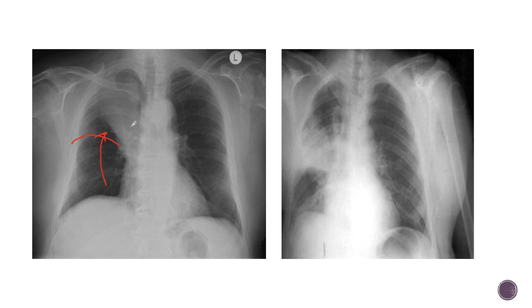In the second image, we can see the presence of opacity in the right upper and mid zone. The horizontal fissure on the right side is horizontally oriented and there are no other features of volume loss. So this is a right upper lobe consolidation.